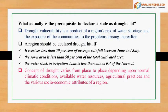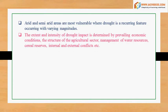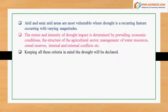The concept of drought varies from place to place depending upon normal climatic conditions, available water resources, agricultural practices, and the various socio-economic attributes of a region. Arid and semi-arid areas are most vulnerable, where drought is a recurring feature occurring with varying magnitudes. The extent and intensity of drought impact is determined by prevailing economic conditions, the structure of the agricultural sector, management of water resources, cereal reserves, and internal and external conflicts. Keeping all these criteria in mind, the drought will be declared.